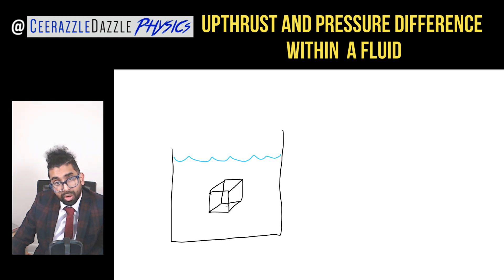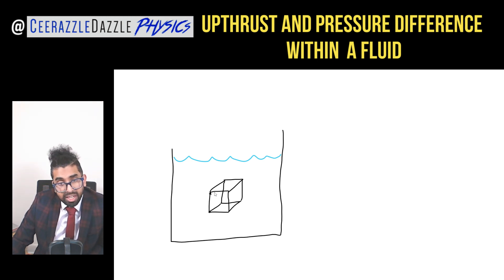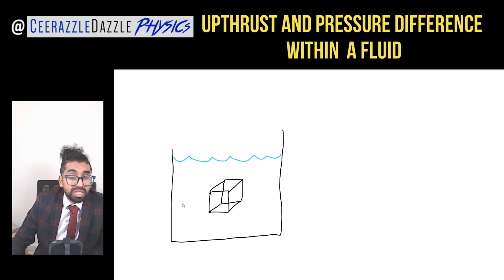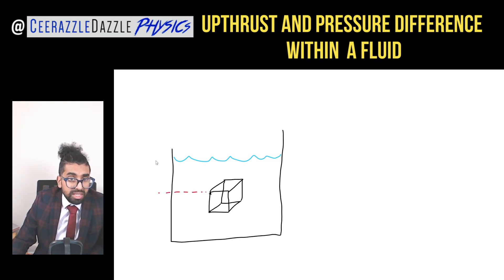So over here I've got a fish tank and I've got a block in place within it — a cube, 3D. Hopefully you remember that pressure will be acting upon this cube, so there'll be a pressure at the top of the cube and a pressure at the bottom. Notice that the pressure won't be the same because it's at different heights.